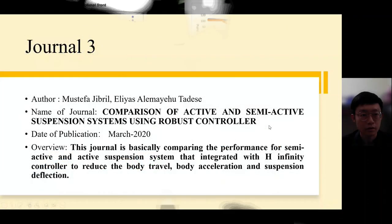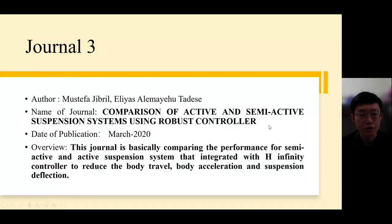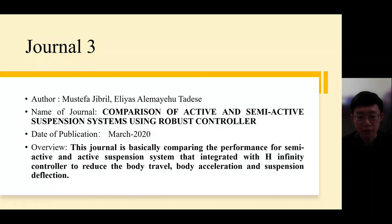For the literature review of journal 3, journal 3 is titled 'A Comparison of Active and Semi-Active Suspension System Using Robust Controller.' This journal is basically comparing the performance of semi-active and active suspension systems integrated with an H-infinity controller to reduce body travel, body acceleration, and suspension deflection.